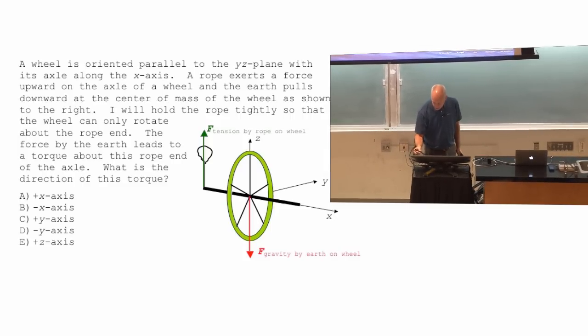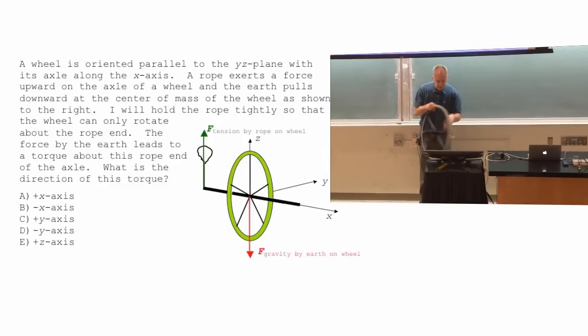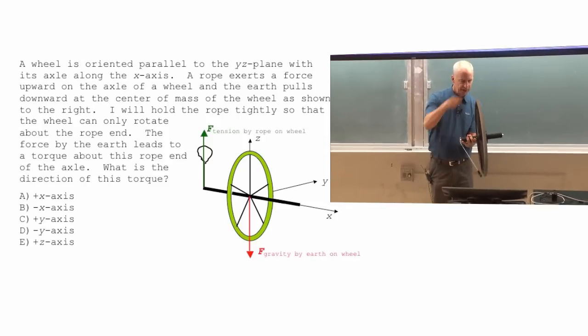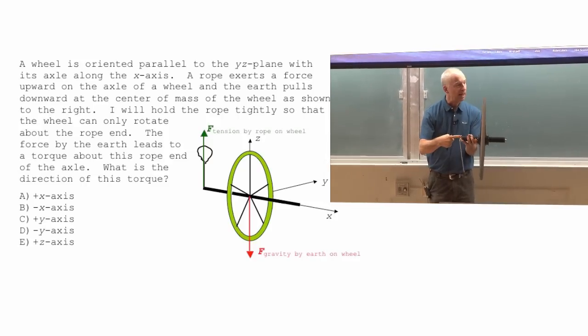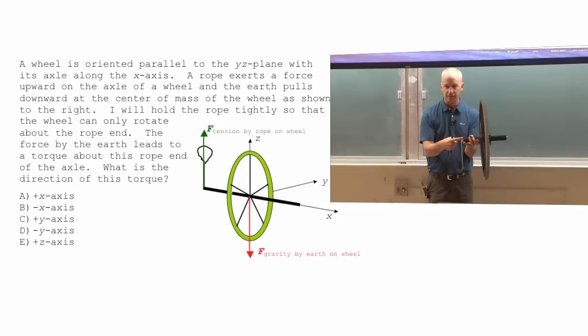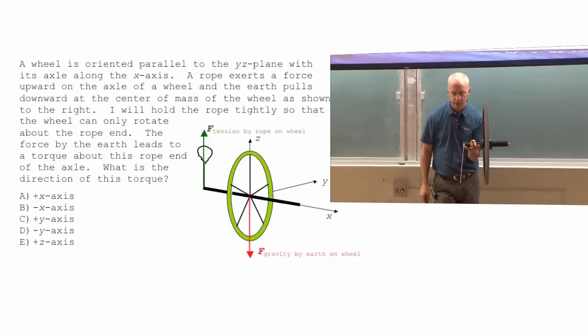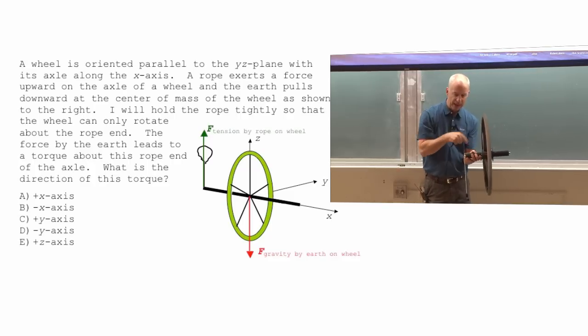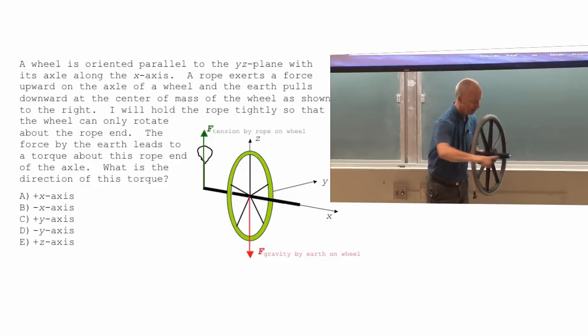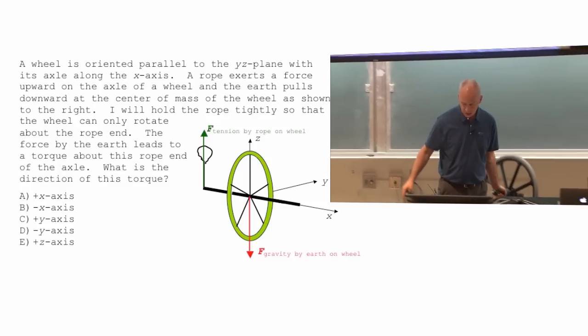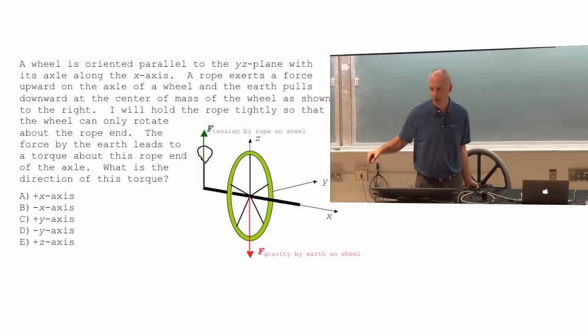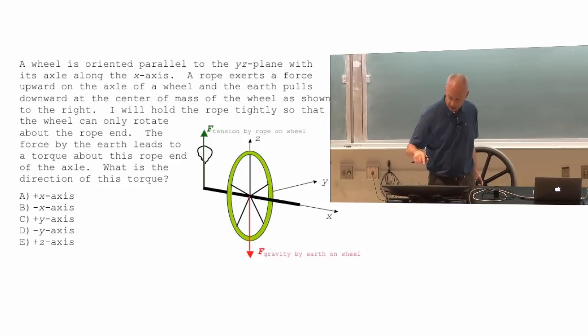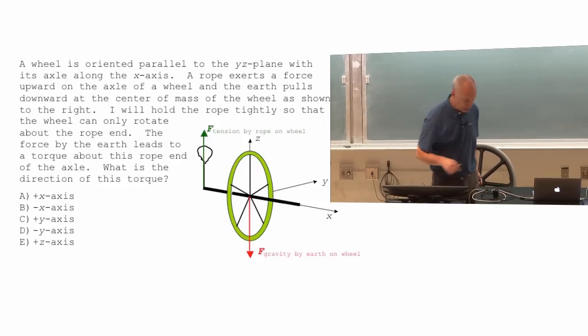So, the wheel, the plane of the wheel, this vertical plane of the wheel, is the ZY plane and the X axis goes straight through the axle of the wheel. So that's what the picture is here. Z goes straight up. Y goes to the back and X is along the axle in that direction. So what's the direction of the torque by those two forces? That's gonna cause the angular momentum to change.